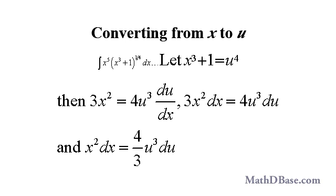Then, by implicit differentiation, 3x squared is equal to 4u cubed times du dx. Separating the differentials, 3x squared dx is equal to 4u cubed du, and x squared dx is equal to 4 over 3 u cubed du.